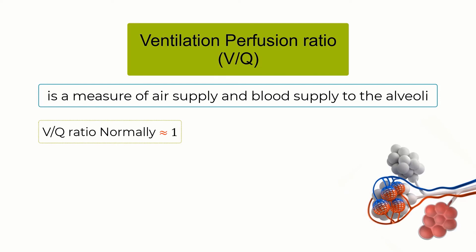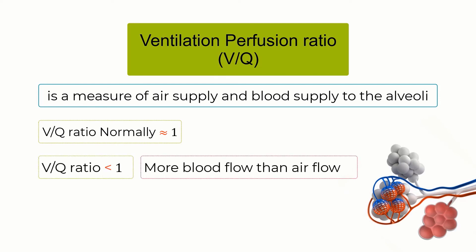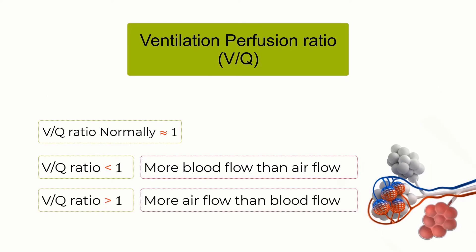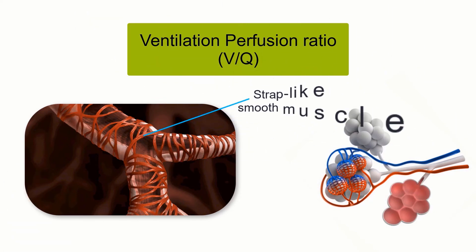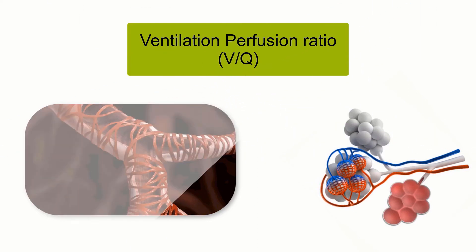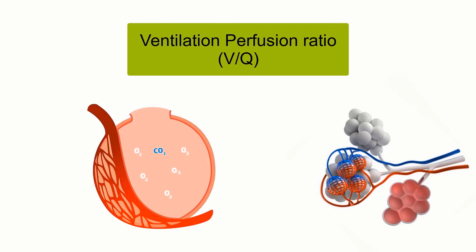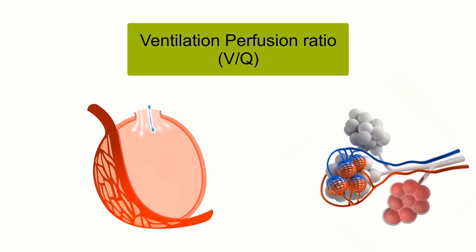A ventilation-perfusion ratio below 1 means there is more blood flow than air flow, and a ventilation-perfusion ratio greater than 1 means there is more air flow than blood flow. The ventilation-perfusion ratio is regulated through dilation or constriction of the bronchioles and pulmonary arterioles. Bronchioles and arterioles have a layer of smooth muscle. When the smooth muscle constricts, it reduces flow, and when it dilates, it increases flow. For example, the bronchioles dilate in response to an increase in carbon dioxide in the lungs. Since carbon dioxide is brought to the lungs by the blood, an increase in carbon dioxide concentration in the lungs is a sign of an increase in blood flow in the alveoli. To match the increase in blood flow, the lungs respond with bronchodilation, increasing airflow.